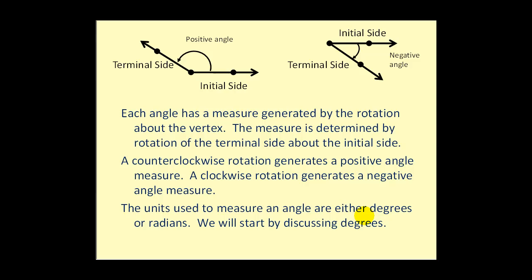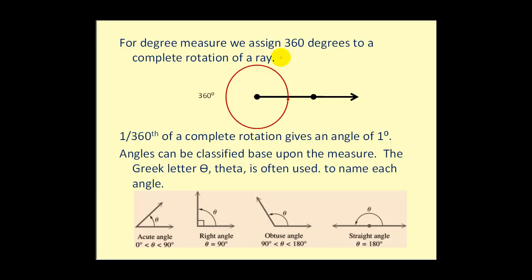The units used to measure an angle are either degrees or radians. We will start by discussing degrees. For degree measure, we assign 360 degrees to a complete rotation of the ray. You can think of this as the second ray going all the way around the circle. Therefore, one three hundred and sixtieth of a complete rotation gives an angle of one degree.